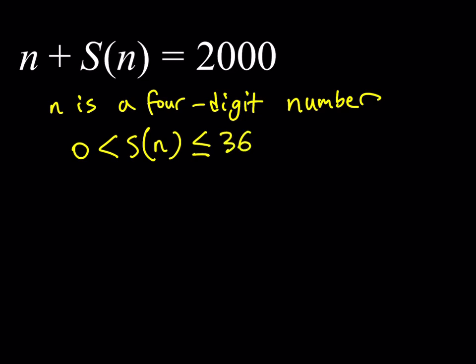Now, this implies some interesting things, because if you go ahead and plug those values into the equation, you're going to notice that, for example, if S(n) is near zero, then obviously, you can just go ahead and subtract from 2000, and that's going to give you 2000. And if you subtract 36 from 2000, you're going to get 1964.